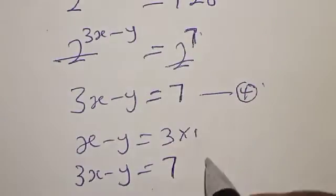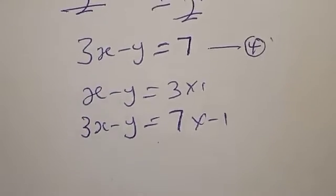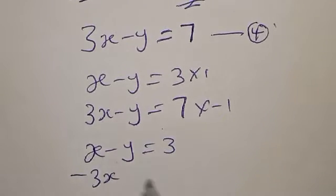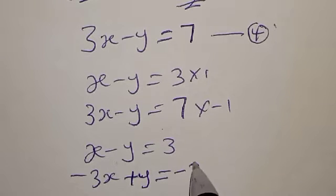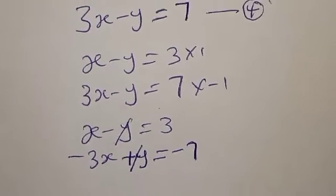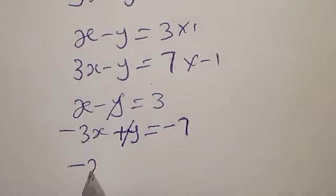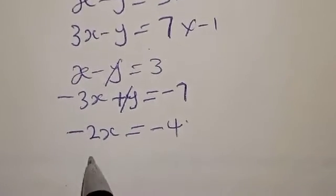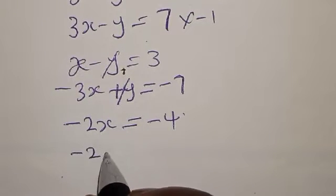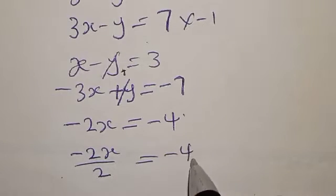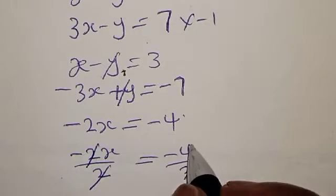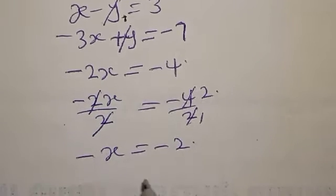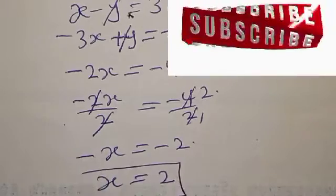Let's multiply equation 3 by 1 and equation 4 by minus 1. We have x minus y equal to 3, and the second becomes minus 3x plus y equal to minus 7. The y terms cancel. We have x minus 3x, which is minus 2x, equal to 3 minus 7, which is minus 4. Dividing both sides by minus 2, we get x is equal to 2.